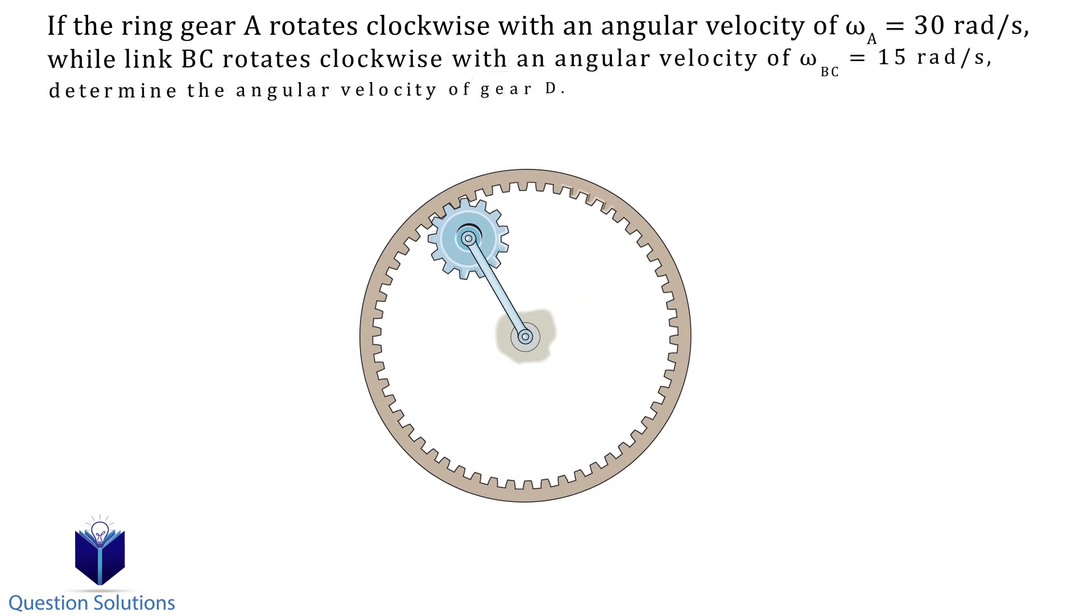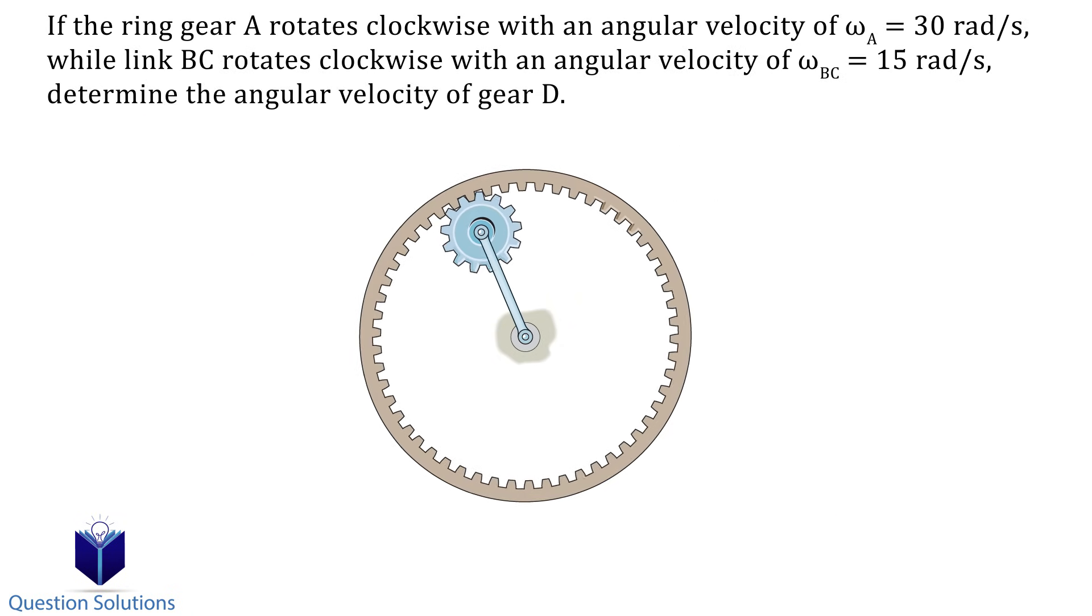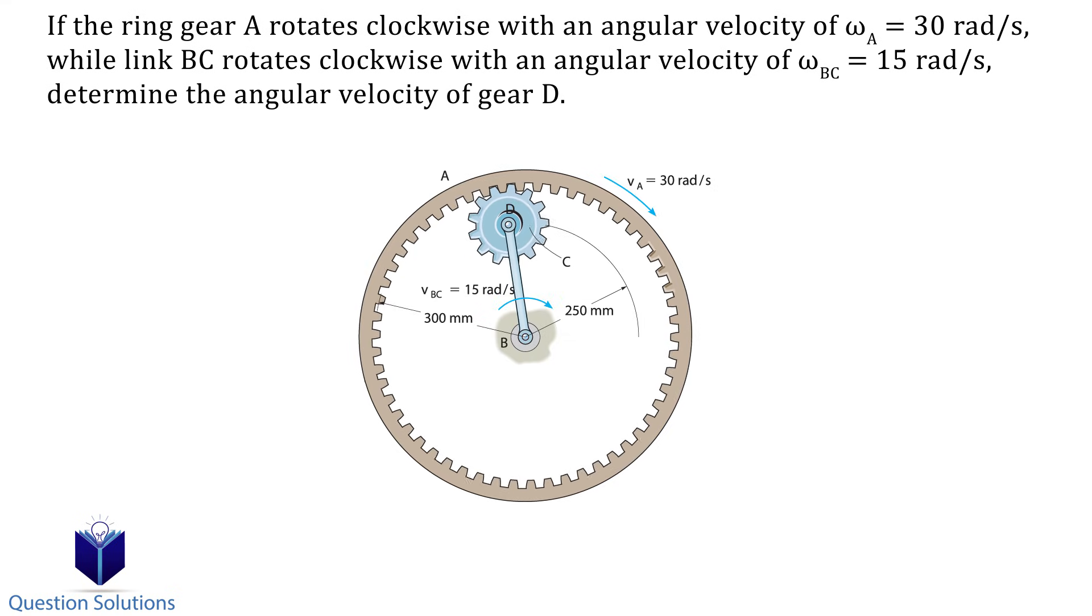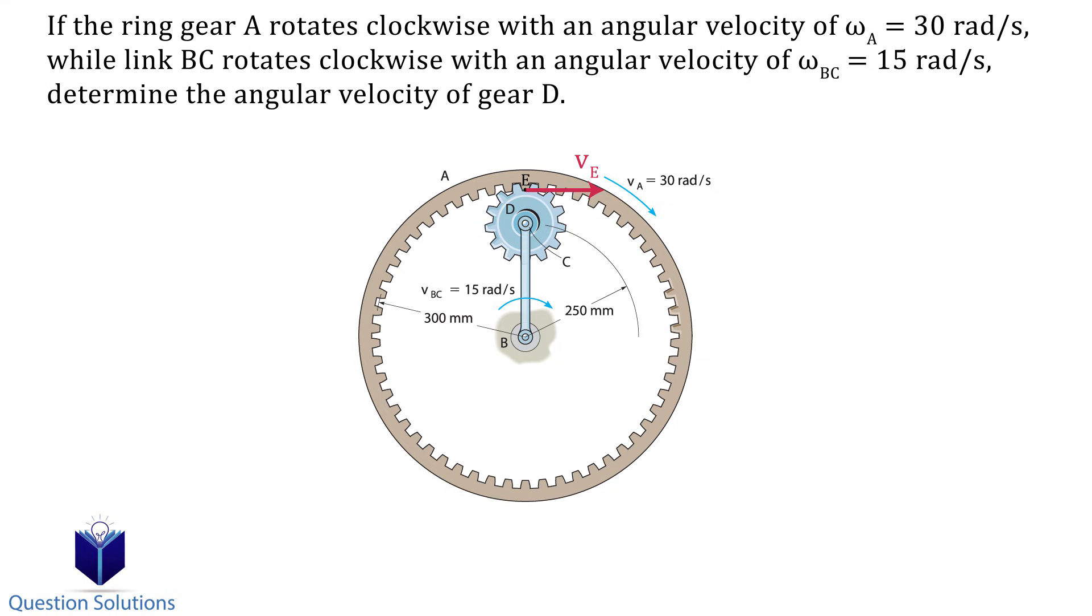In this problem, we need to determine the angular velocity of gear D. We know from the question that the ring gear A rotates with an angular velocity of 30 rads per second while the link BD rotates with an angular velocity of 15 rads per second. Let's label where gear D and A contacts as point E. We can calculate the velocity of point E and the velocity of point C.